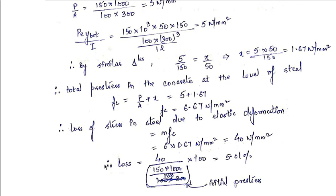To find the percentage loss: loss / initial pre-stress × 100. The initial pre-stress = P / area of steel wires = 150 × 1000 / 188. Then percentage loss = 40 / (initial pre-stress) × 100, which comes out to approximately 5.01% — corrected to 6.01%. Therefore the total percentage loss due to elastic deformation in the pre-stress is approximately 5–6%.